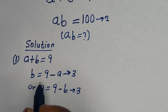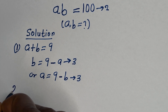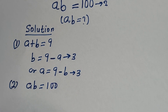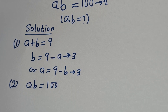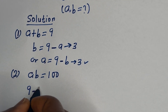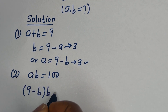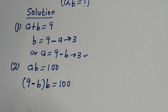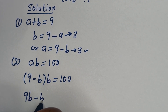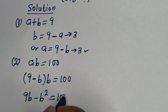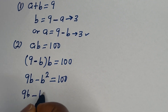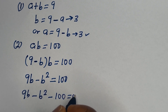So now let's make use of either B or A. From equation 2, AB is equal to 100. Let us substitute for A, which is 9 minus B. We have (9 minus B) times B is equal to 100. Now let's open the bracket: 9 multiplied by B is 9B, minus B multiplied by B, that is B squared, is equal to 100. This gives us 9B minus B squared minus 100, equal to 0.